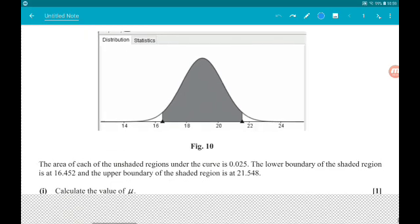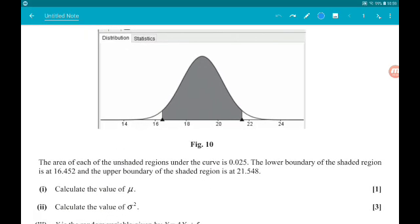We are told that the area of each of the unshaded regions under the curve is 0.025. The lower boundary of the shaded region is at 16.452, and the upper boundary of the shaded region is at 21.548. Part 1 for one mark wants us to calculate the value of μ.